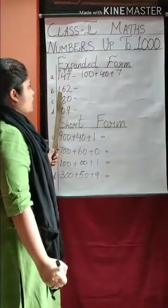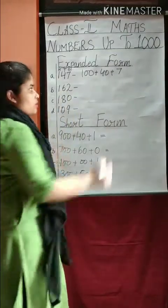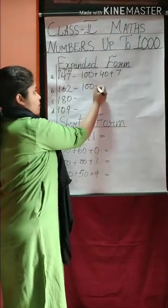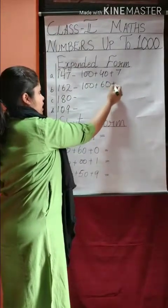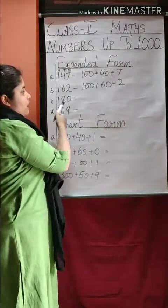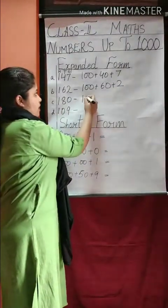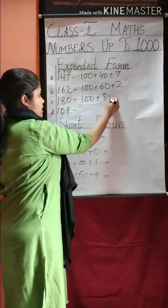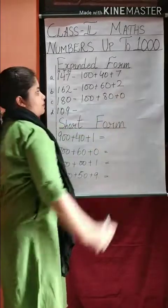Next is one hundred sixty-two. So we will write one hundred plus sixty plus two. Then one hundred eighty — we write one hundred plus eighty. As you can see, zero is in the 1's place, so we write zero.